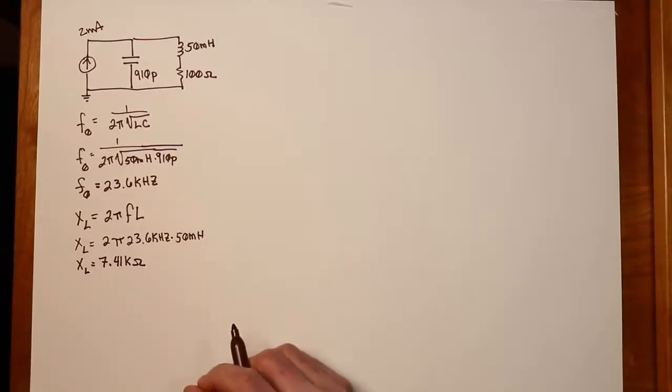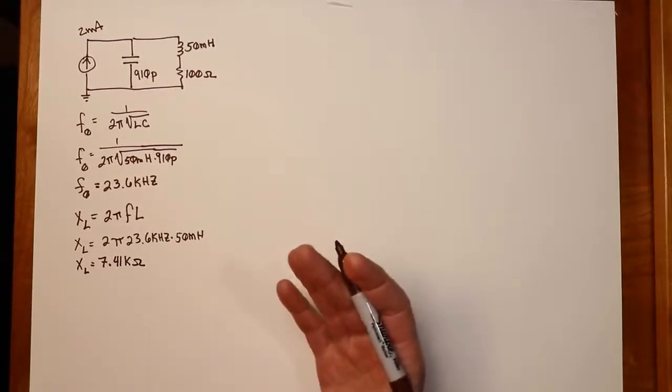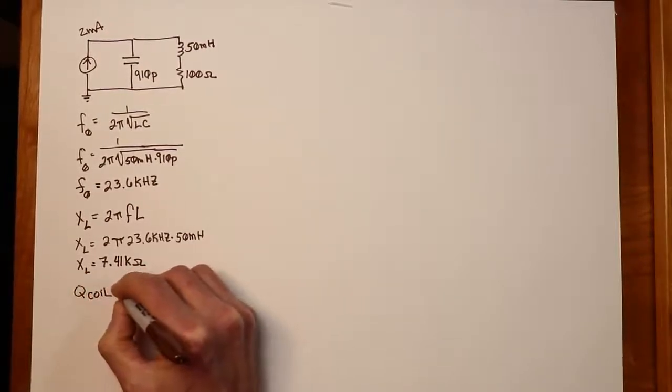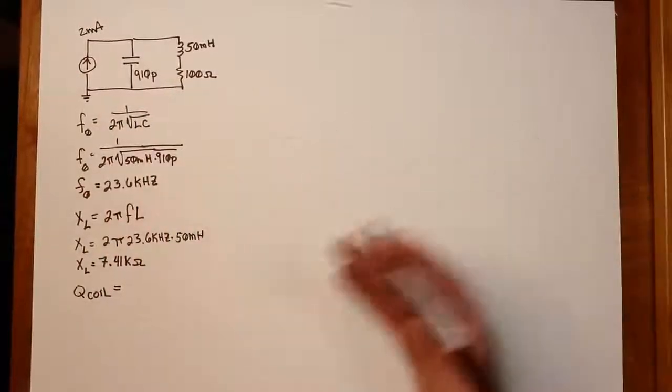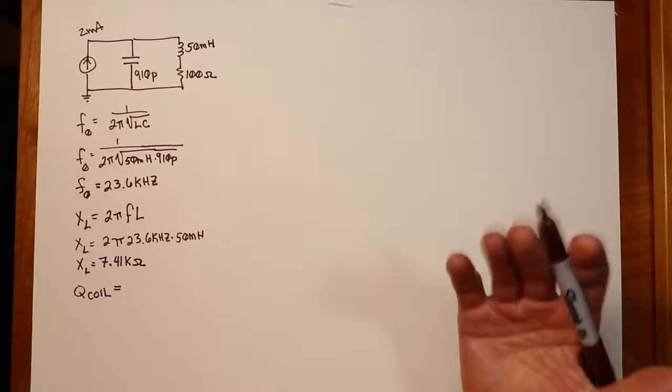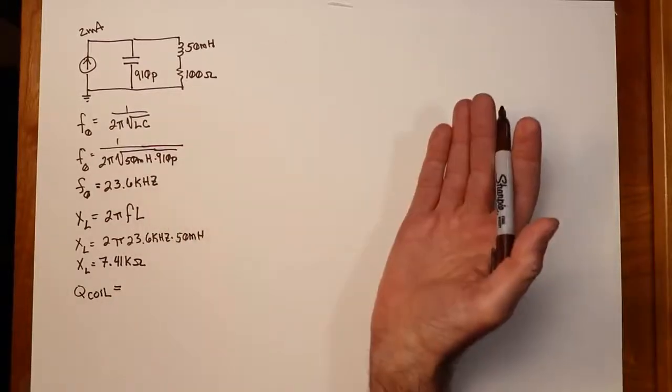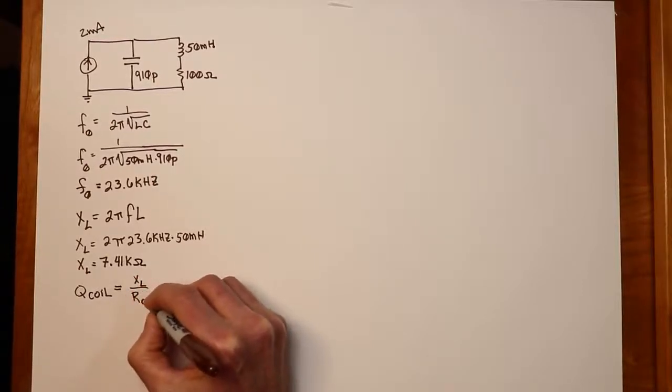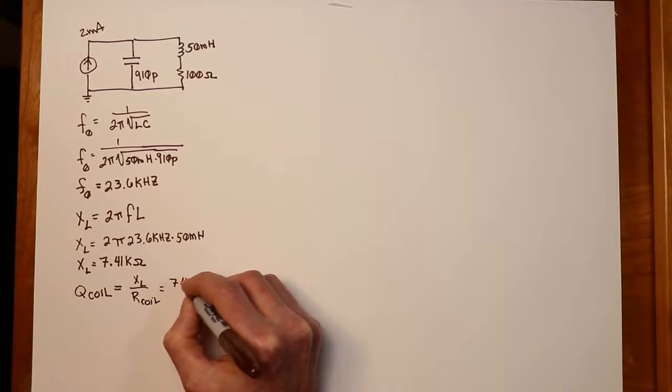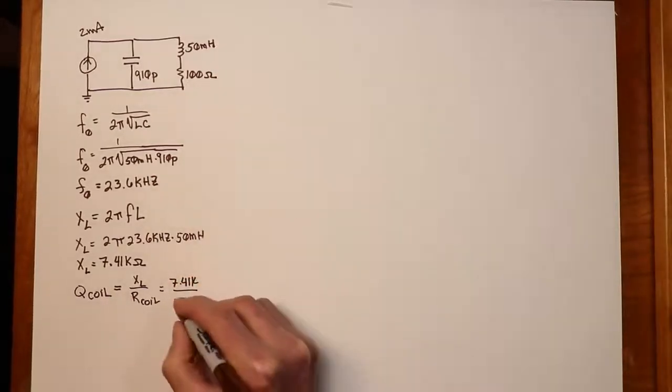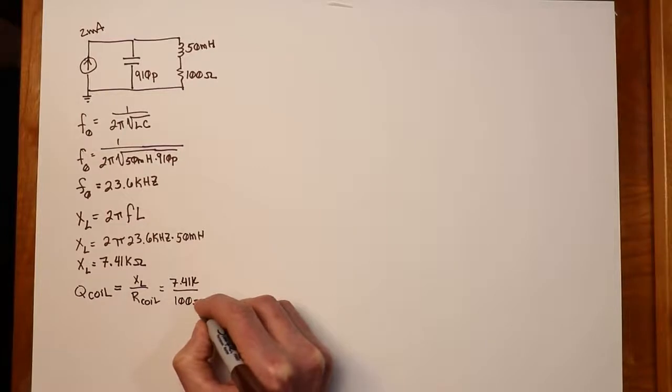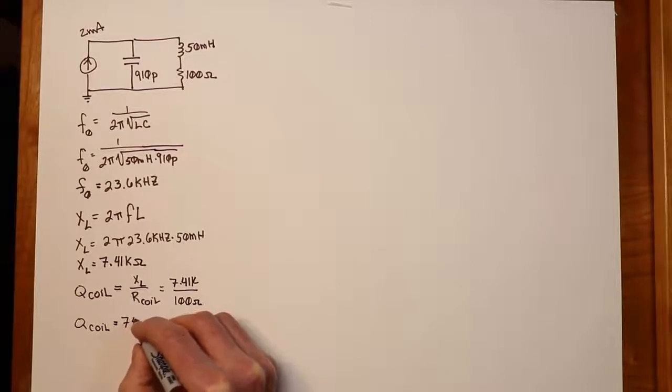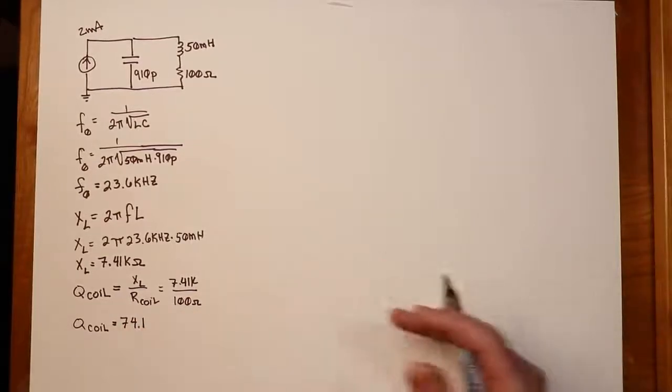From here, we can figure out the expected value of Q coil. Now remember, the Q of the system cannot be any higher than Q coil. This sets the ceiling. So hopefully this is better than 10. Well, yeah, obviously it's going to be because this is X of L divided by R coil. That's 7.41k divided by 100 ohms. And the Q coil is 74.1. So that's certainly a high enough value.